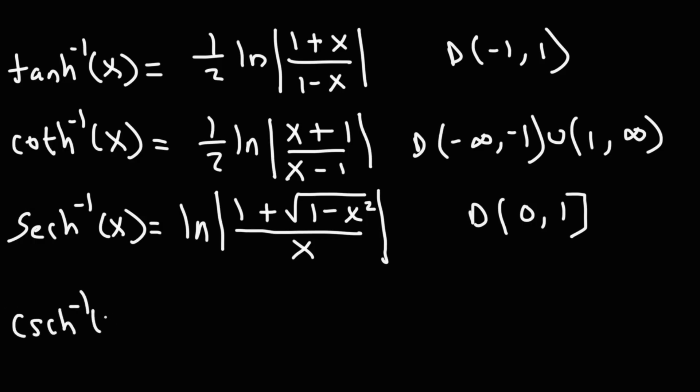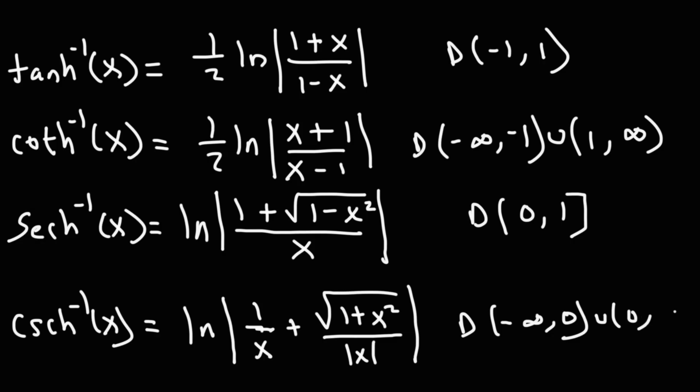Next, we have the inverse hyperbolic cosecant function. It's going to be ln. It's actually very similar to this, but instead of one fraction, it's broken down into two fractions. According to my textbook, it's 1 over x plus the square root of 1 plus x squared over the absolute value of x. And the domain is negative infinity to 0 union 0 to infinity. So the domain is all real numbers except 0.